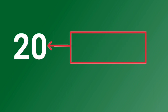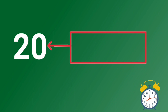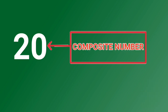Next, number 20. 20 has more than two factors. Therefore, it is a composite number.